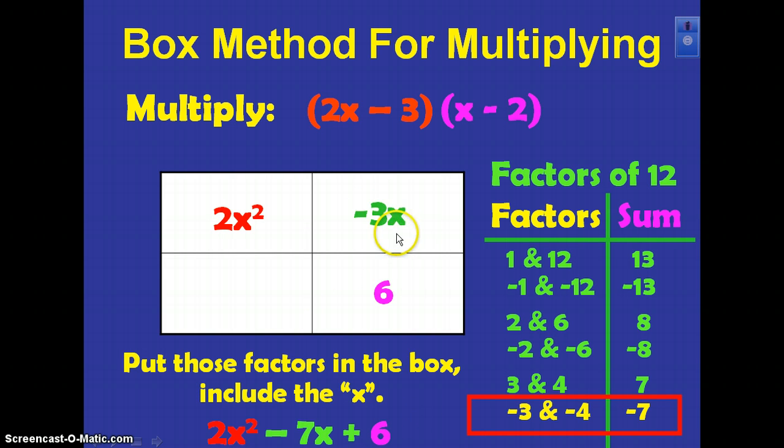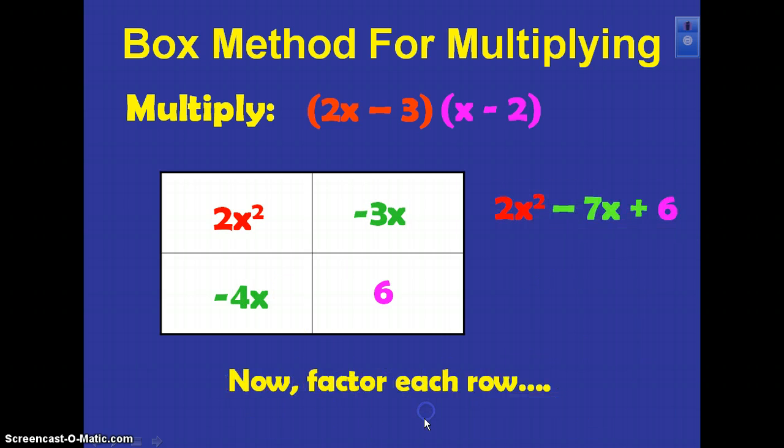So what we're going to do is use those two numbers and put them in the box, and don't forget to include the x with that term. So I've got negative 3x here. What goes down here? Yep, negative 4x. When you multiply these two together, you get your 12x squared. When you add them together, you get this negative 7x down here.